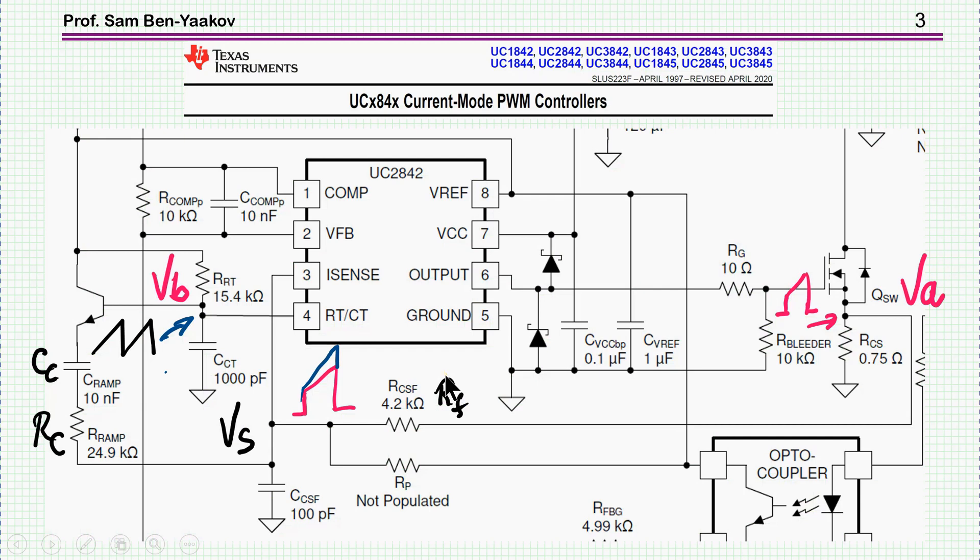This is just a filter capacitor. Now in the data sheet of this controller's family and some other families, TI shows the way to do it by the following circuit: we have the signal generated here, then we have a buffer, this is the BJT transistor.